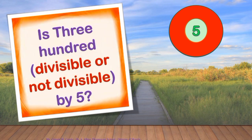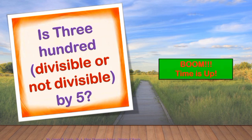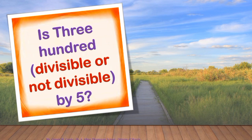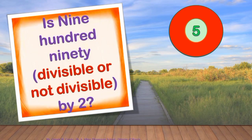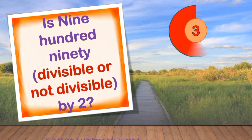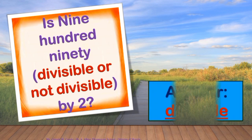Is 300 divisible or not divisible by 5? Your 5 seconds starts now. Time is up. And the correct answer is? Divisible. Number 3: Is 990 divisible or not divisible by 2? Your 5 seconds starts now. Go! Time is up. And the correct answer, children, is? Very good! Divisible.